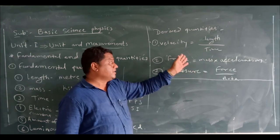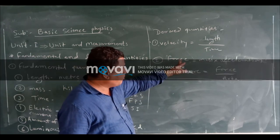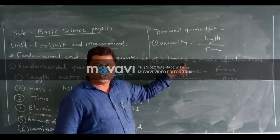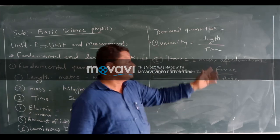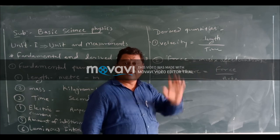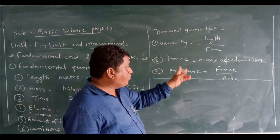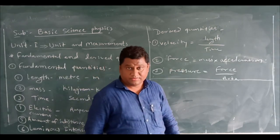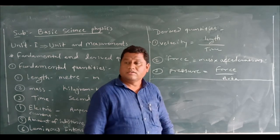Some other examples are given here. Force is also a derived quantity because the force formula is mass into acceleration. Mass is a fundamental quantity, and the product of mass and acceleration is called force. And next is pressure.